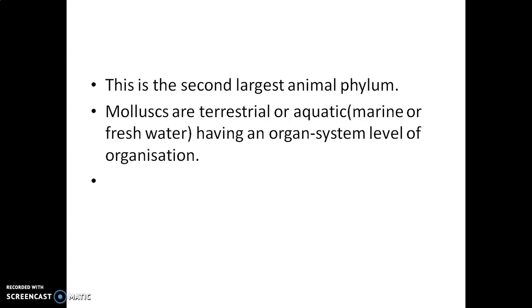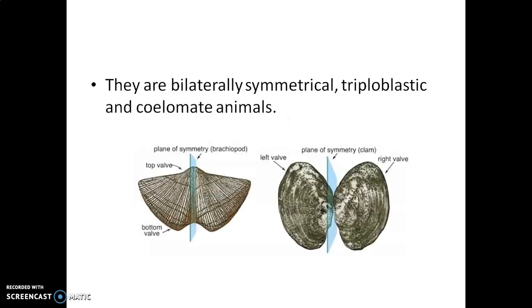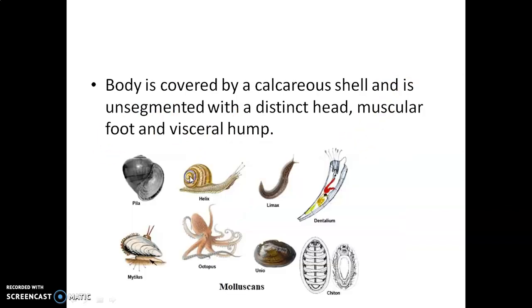Mollusca are terrestrial or aquatic, having an organ system level of organization. They are bilaterally symmetrical — that means the left lateral side and right lateral sides correspond. They have a triploblastic body.